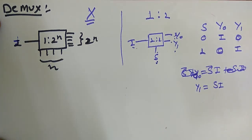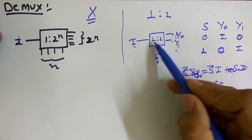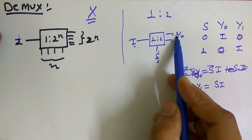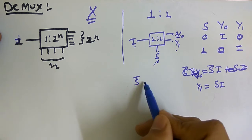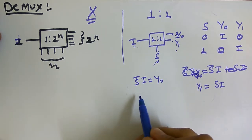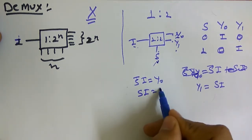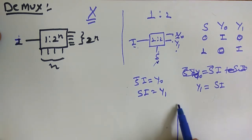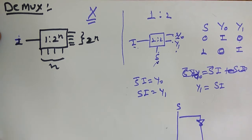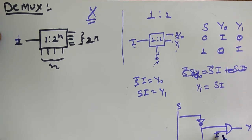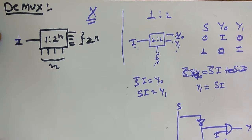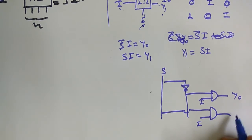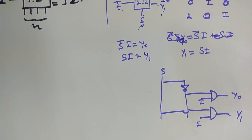So the boolean expression for this will be: for Y0, this will be S-bar into I, and for Y1 this will be S into I. Let's implement this: S-bar into I gives Y0, and S into I gives Y1. That is how the 1-to-2 demultiplexer is implemented.